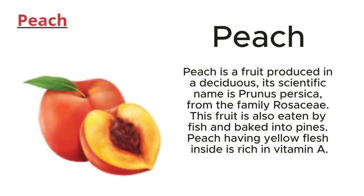Peach: Peach is a fruit produced in a deciduous tree. Its scientific name is Prunus persica, from the family Rosaceae. This fruit is also eaten fresh and baked into pies. Peach has yellow flesh inside and is rich in vitamin A.